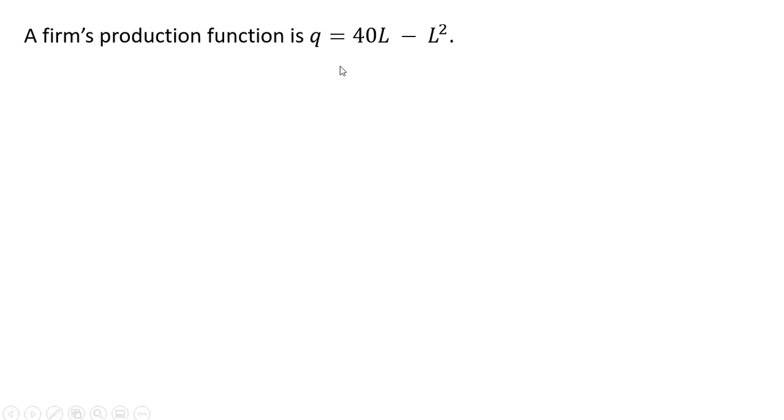Here's the firm's production function. Q is the quantity of output, L is units of labor. The price of the output good P is $10 and the price of labor we can just set at W.